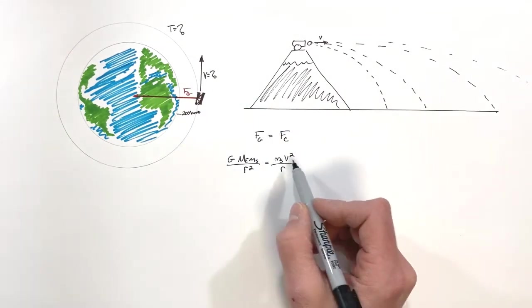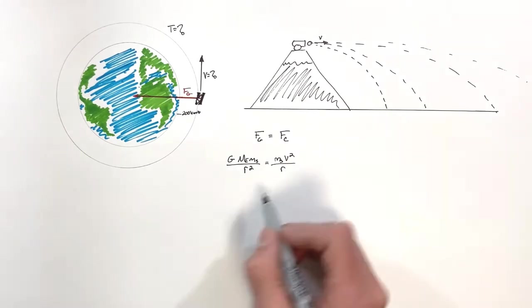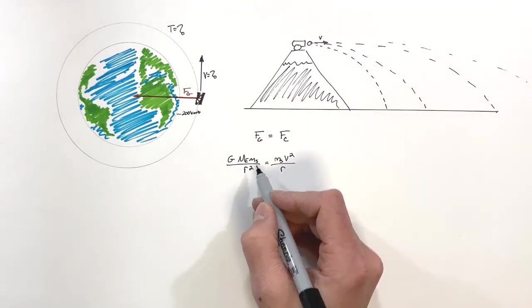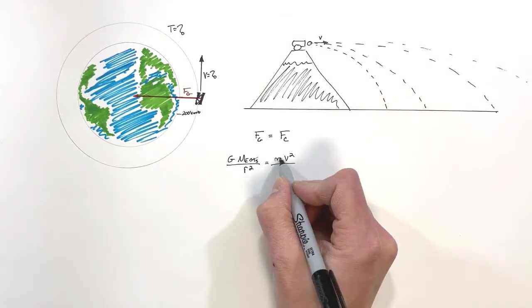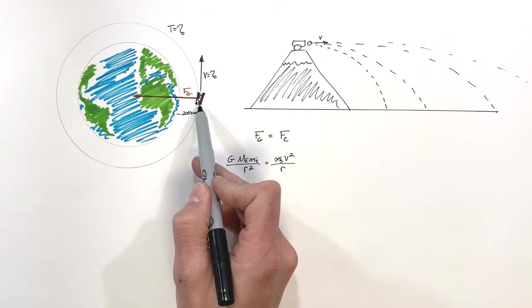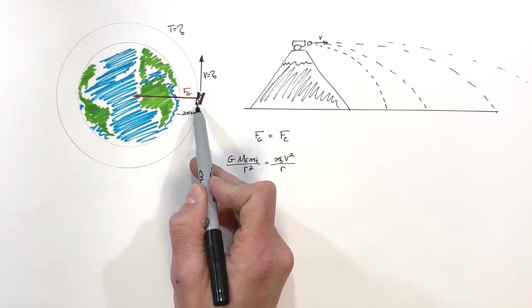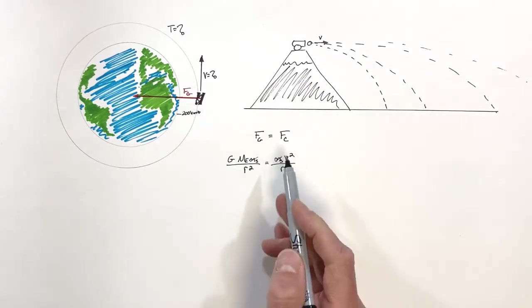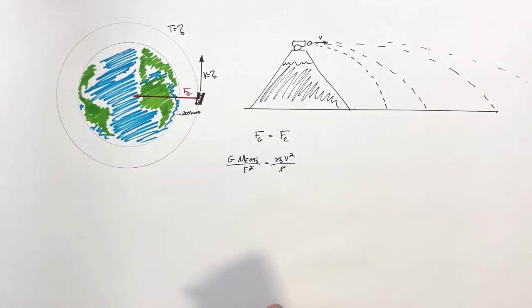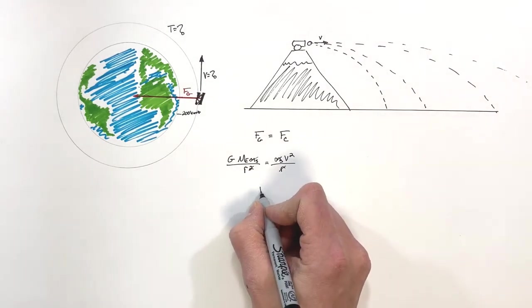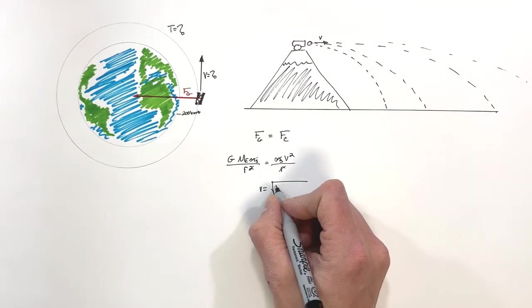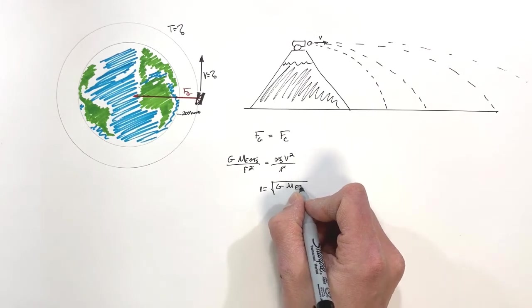The mass of the satellite cancels out, so it is actually irrelevant — whether it's a small man-made satellite or something large like the moon, mass doesn't matter. The radius also partially cancels out, and we're left with: velocity equals the square root of G times the mass of the Earth divided by the radius of orbit.